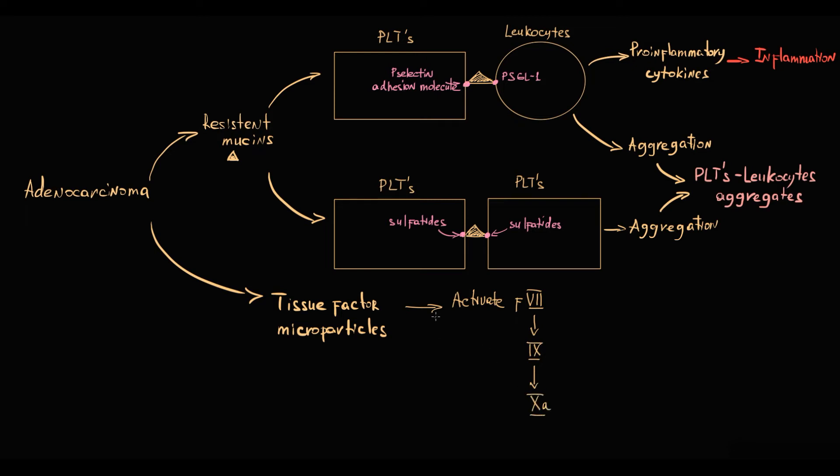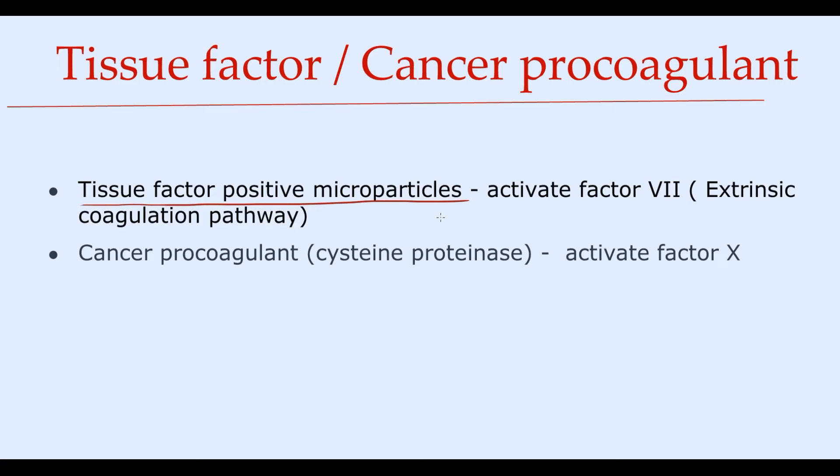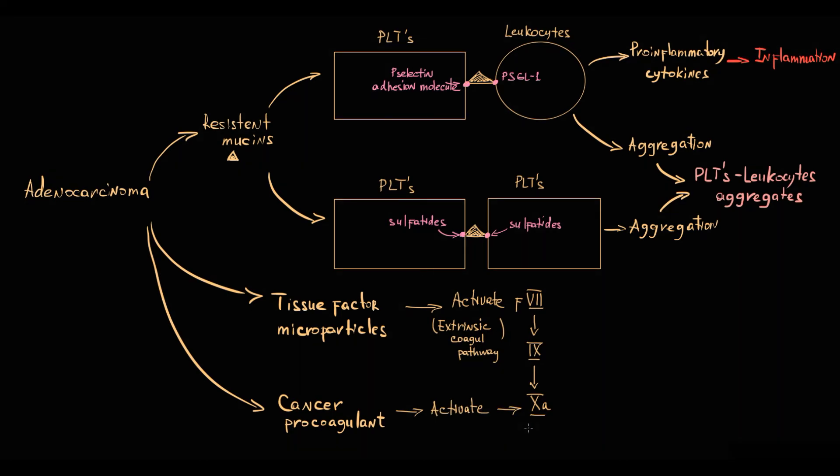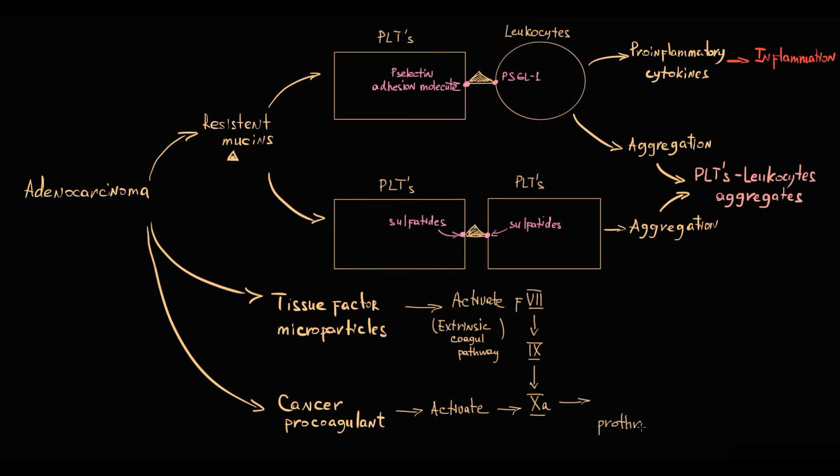Thereby tissue factor activates the entire extrinsic coagulation pathway. Another substance released by cancer cells is called cancer procoagulant. In fact, it's a cysteine proteinase that can cleave a part of factor 10 protein, thereby directly activating it. So tissue factor and cancer procoagulant both lead to activation of factor 10, and eventually factor 10 converts prothrombin into thrombin, and thrombin converts fibrinogen into fibrin that stabilizes platelet aggregates, and this results in formation of a formidable thrombus.